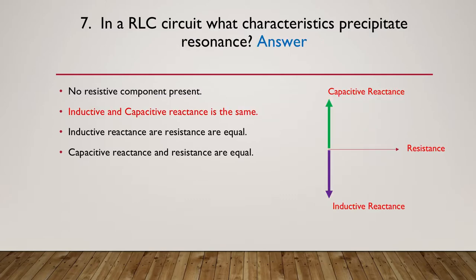The answer is the inductive and capacitive reactances are the same. There's a green phasor and a purple phasor — one for capacitive reactance, one for inductive reactance. When they are both the same they cancel each other out and you're only left with the resistive component in the circuit. That's called resonance — the green and purple arrows are equal, they cancel, and only the horizontal resistance remains.